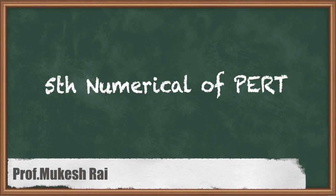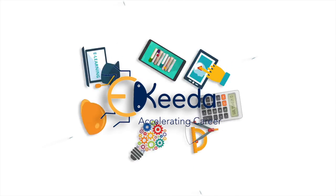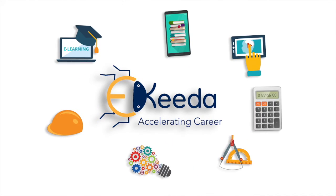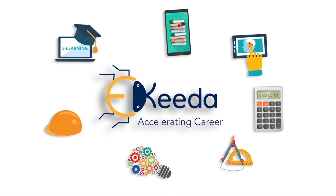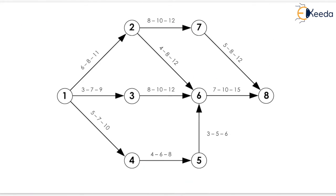Hello students, today we are going to solve the fifth numerical of PERT. The question is given as: the network for a certain project is shown in figure; determine the expected time for each of the paths and which path is critical. Now the network diagram is shown here. We have to compute the TE, TL, and slack for all the events and determine the critical path for this network.